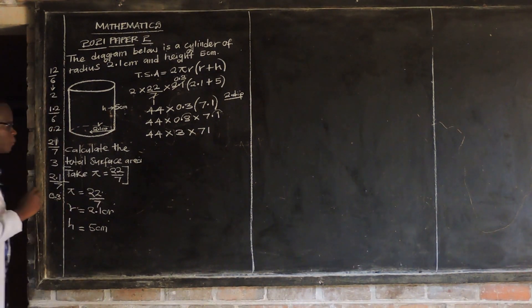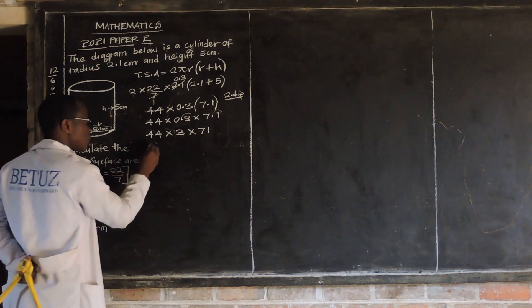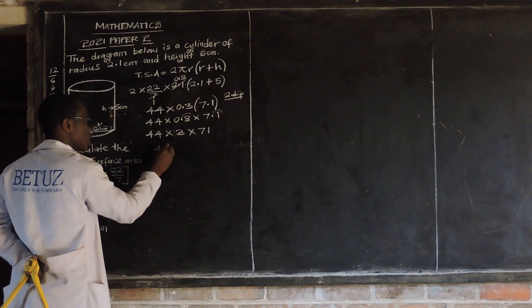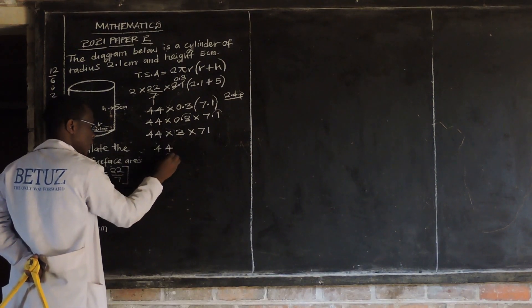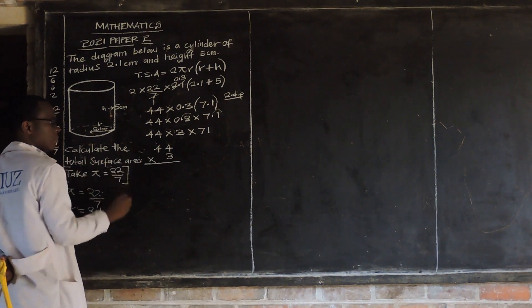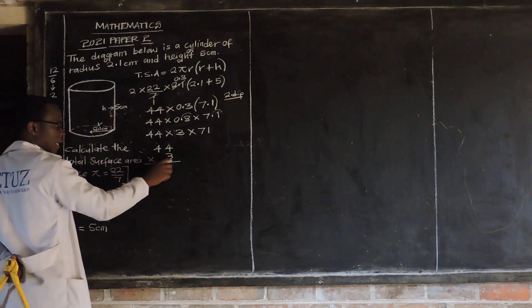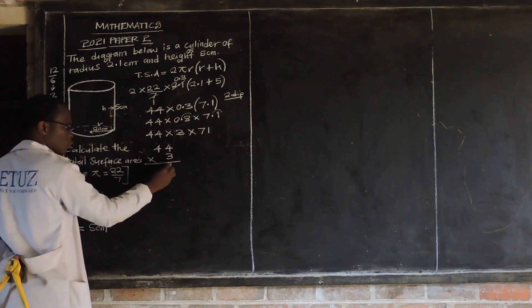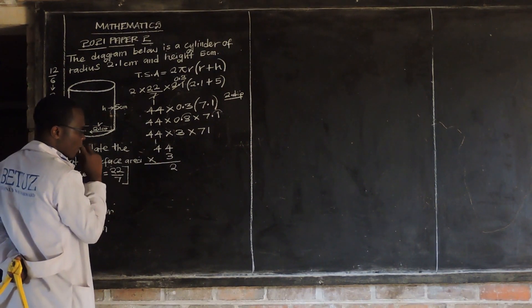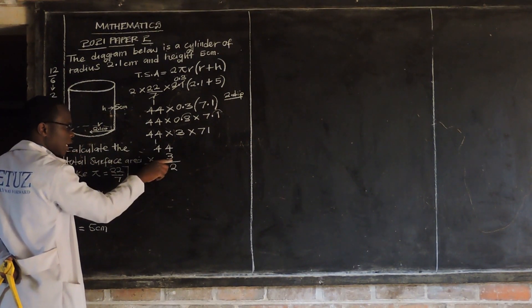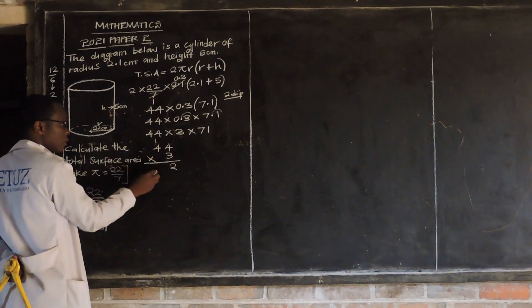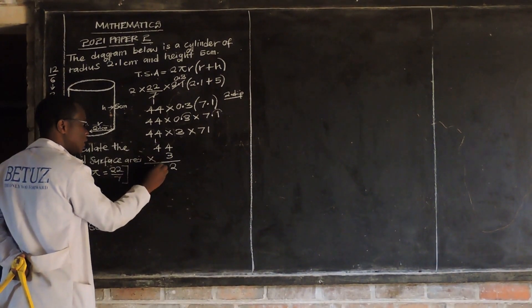We now multiply. So 44 multiplied by 3: 3 times 4 is 12, write 2 carry 1; then 3 times 4 is 12, plus 1 is 13. So 44 times 3 gives 132. Then we multiply 132 by 71.